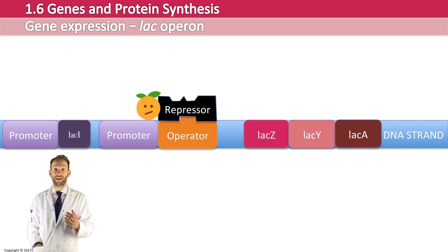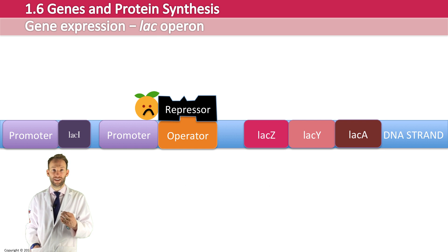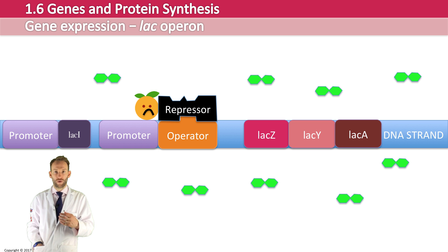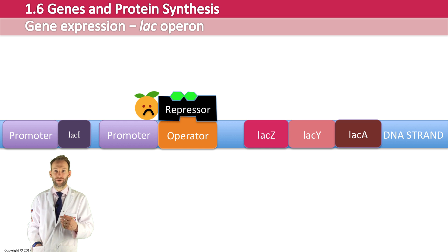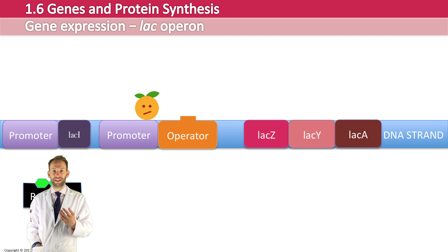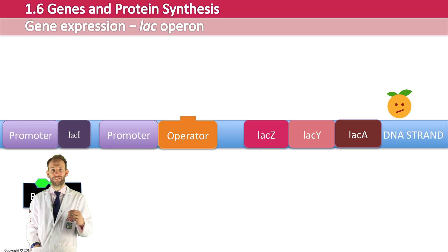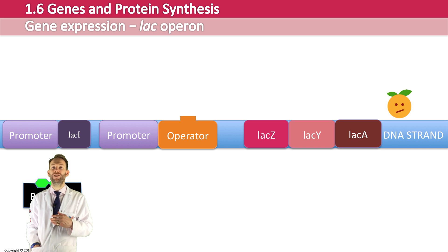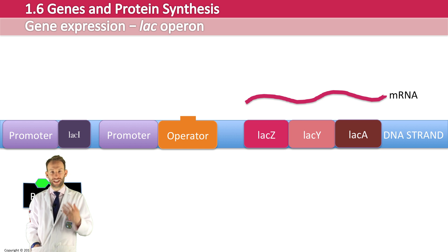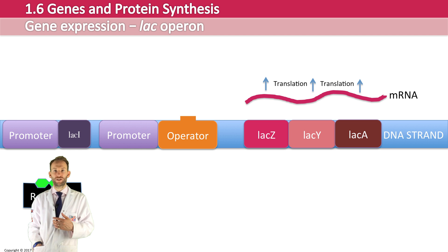If E. coli finds itself in a lactose substrate, how are these genes switched on? The lactose can actually bind to the repressor protein, and when it does, it changes its shape and can no longer bind the operator — so it's released from the operator. When that happens, the RNA polymerase is now free to continue moving along the DNA strand. It can read those three genes in transcription, and then translation can occur from the messenger RNA to make the three enzymes required to break down lactose.